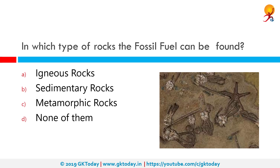In which type of rocks can fossil fuel be found? The correct answer is sedimentary rocks. Fossils are preserved remains of animals and plant life and are mostly found embedded in sedimentary rocks. Of sedimentary rocks, most fossils occur in shale, limestone, and sandstone.